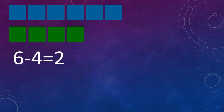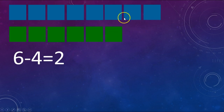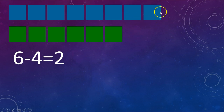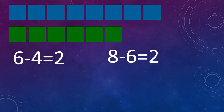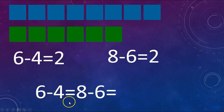Now what if I added 2 more squares to each line — 2 more blue ones, 2 more green ones? Do you think the difference is gonna stay the same or be different? Let's look and see. I'm going to add 1, 2 blue ones here and 1, 2 green ones here. Did the difference change or did it stay the same? It stayed the same — there's still a difference of 2 blue squares. So the new number sentence is 8 minus 6 equals 2. So 6 minus 4 equals 8 minus 6, and they both equal 2.